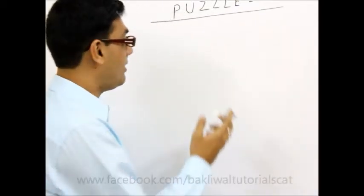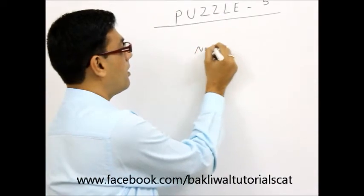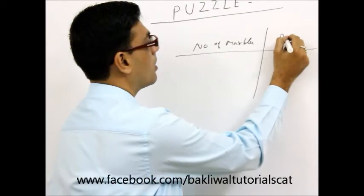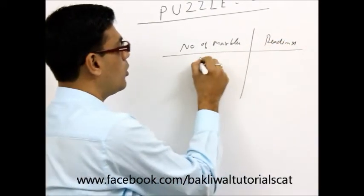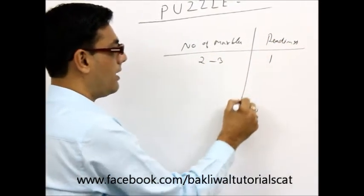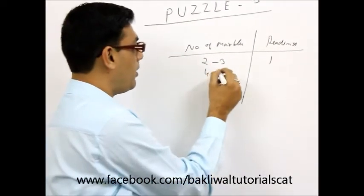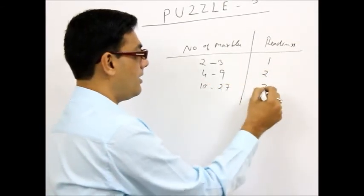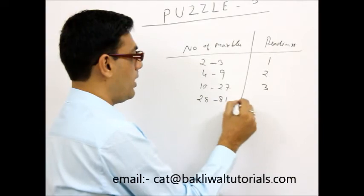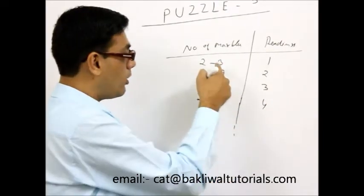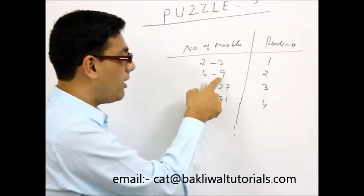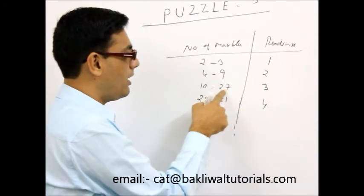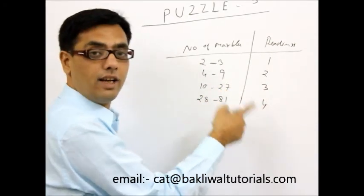Now what I want to tell you is that I want to make a table. If the number of marbles are 2 or 3, you will have exactly 1 reading. If there are anywhere between 4 to 9, there are 2 readings. If there are 10 to 27, 3 readings. 28 to 81, 4 readings and so on. Now these numbers you must note. These are nothing but powers of 3. So 3 to the power 1, 1 reading. 3 square, 2 readings. 3 cube, 3 readings. Till 3 to the power 4, 4 readings and so on.